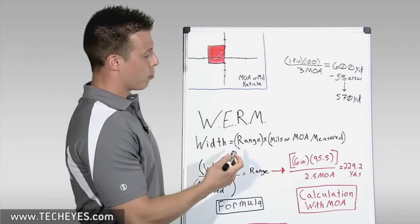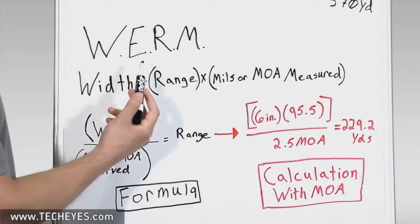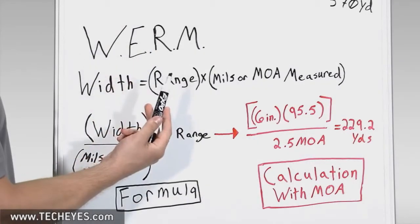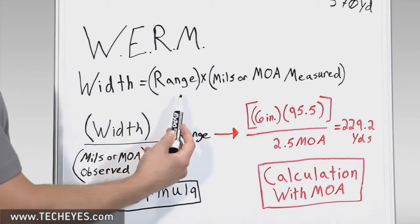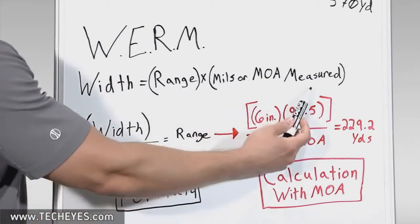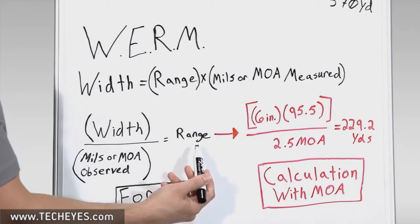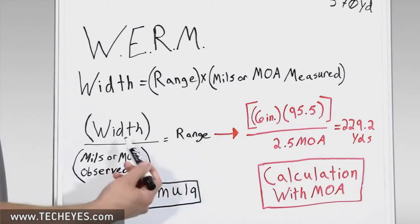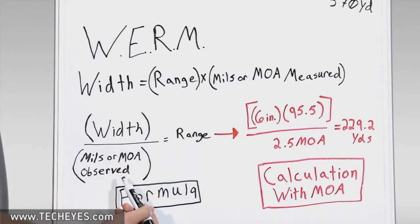Knowing what we know from looking through the riflescope, we use those values to plug into the WORM equation, where width equals range times mils or MOA measured. In this case, we want to isolate for range, so we get range equals width over mils or MOA observed.